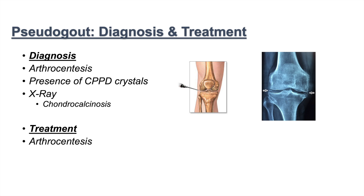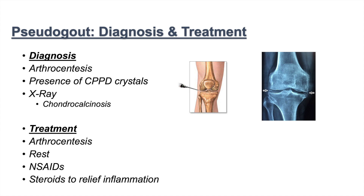Treatment of pseudogout can include arthrocentesis — aspirating those crystals out of the joint. We can also use supportive treatment, since many cases are self-limiting: rest, NSAIDs like ibuprofen, or steroids to relieve inflammation. This was a quick lesson on pseudogout — please like and subscribe for more videos like this one.